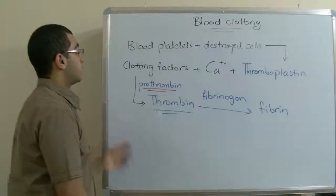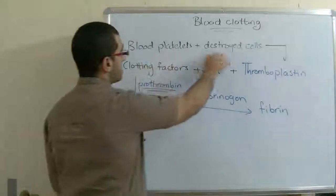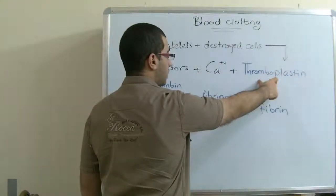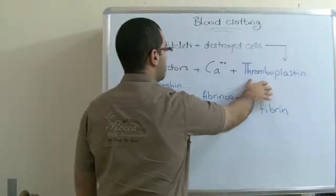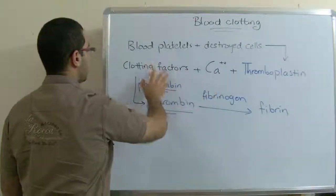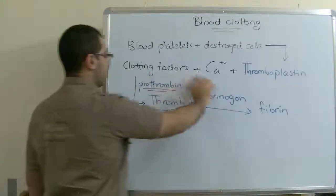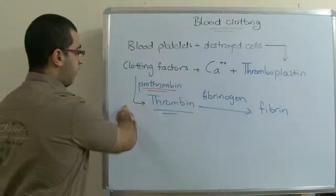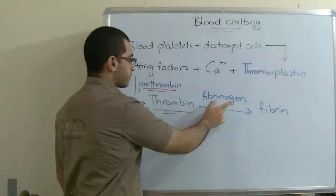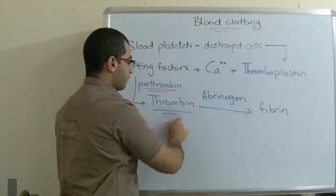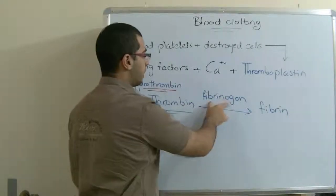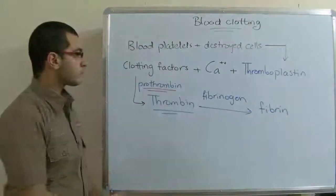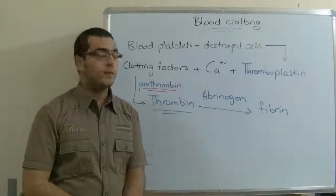And this is how the blood clots. When the vessel is cut, the blood platelets together with the destroyed cells of the vessel form a protein substance called Thromboplastin. The Thromboplastin, together with the calcium ions and the blood clotting factors, activate the Prothrombin into active Thrombin, which as an active enzyme performs its function by transforming the fibrinogen into fibrin — fibers that prevent the blood from bleeding.